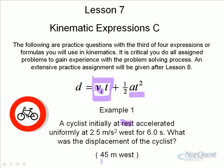Notice your answer: 45 meters. Because I asked for the displacement, I should give my answer as a vector. So 45 meters which way? Well, you go back to the question and it says he was accelerating west, so he must have had a displacement that was west. That's a typical example.